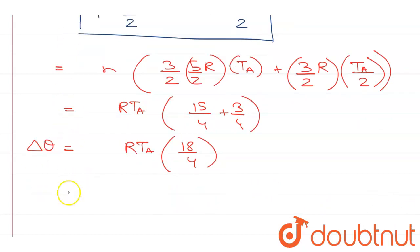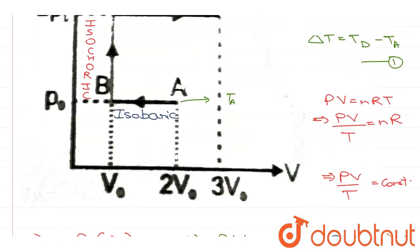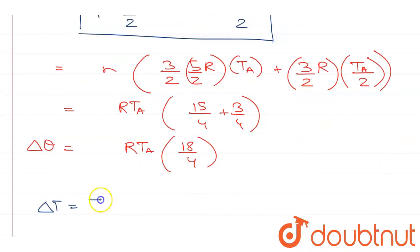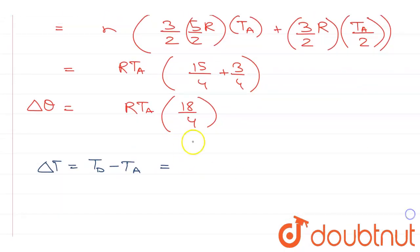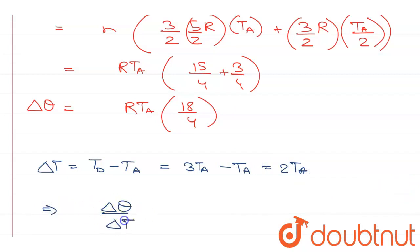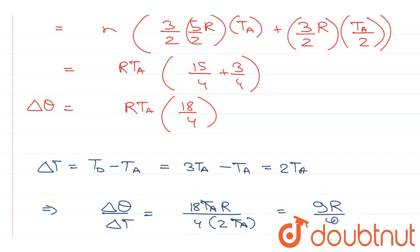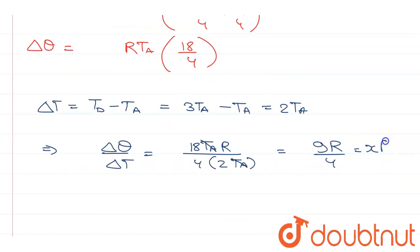From equation 1, ΔT = TD − TA = 3TA − TA = 2TA. Therefore, ΔQ/ΔT = (18RTa/4) / (2TA) = 9R/4. Since the question states this equals xR/4, we conclude that x = 9.